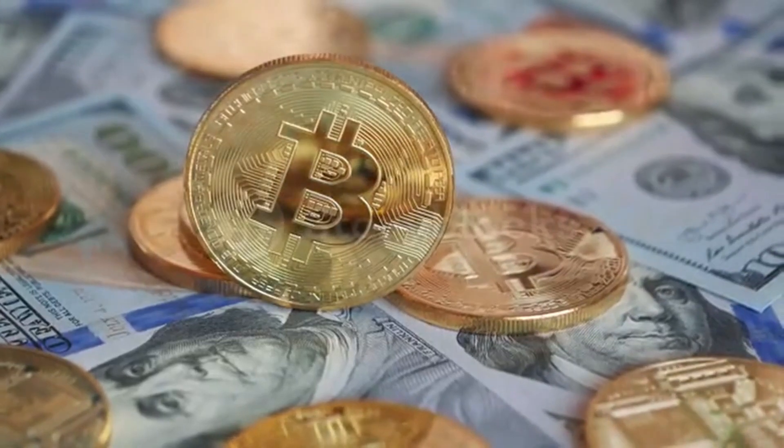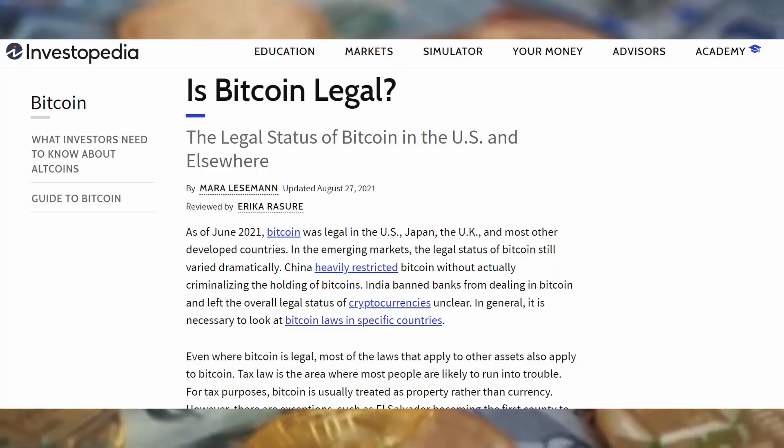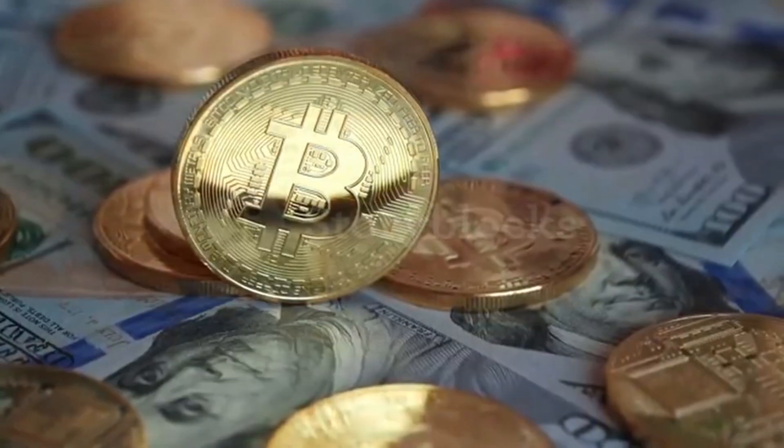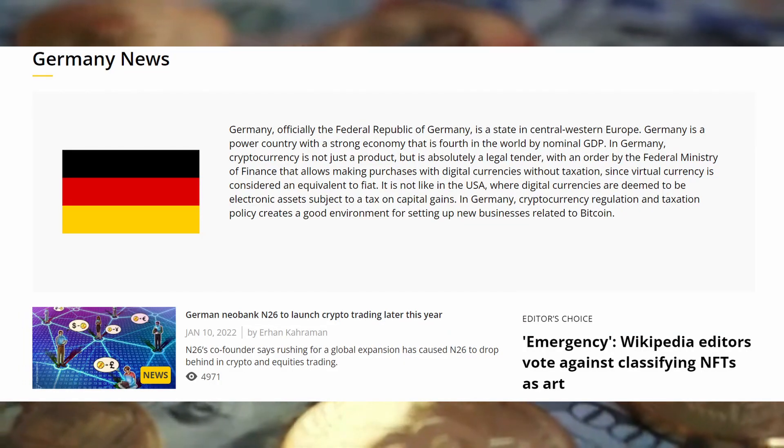For example, as of 2021, bitcoin is legal in USA and it is taxed as property. In other countries like Germany, even banks are permitted to buy and sell cryptocurrencies.